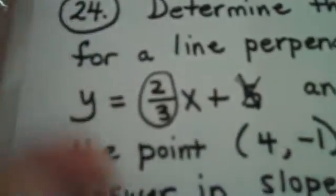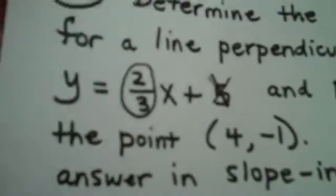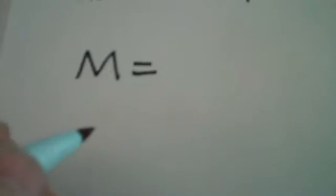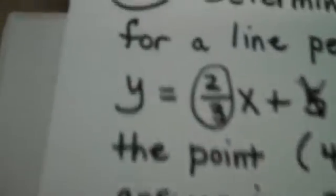But the 2/3 does. Our line is perpendicular to this line. So that means our slope of the line we're looking for is the opposite reciprocal of 2/3, which would be -3/2.